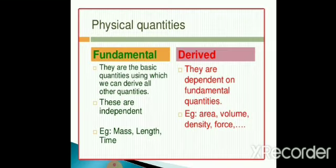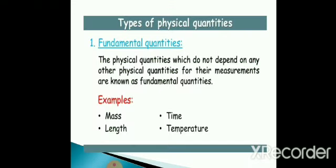Physical quantities are subdivided into two: fundamental quantities and derived quantities. Fundamental quantities are the basic quantities using which we can derive all other quantities, while derived quantities are dependent on fundamental quantities. Fundamental quantities are defined as the quantities which do not depend on any other physical quantities for their measurements. For example, mass, length, time, and temperature.